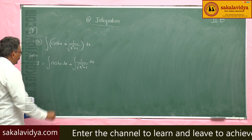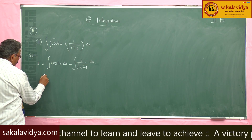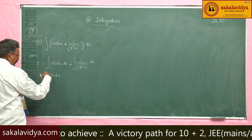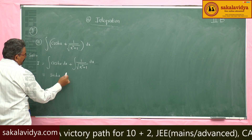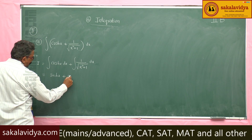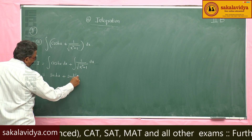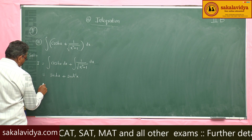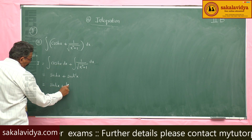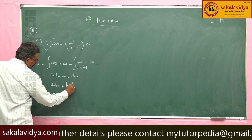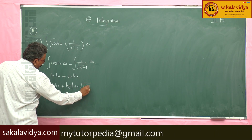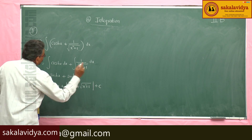The integral of cosh x dx is sinh x, plus the integral of 1/√(x² + 1) dx which is sinh⁻¹ x. This gives sinh x + log|x + √(x² + 1)| + C.